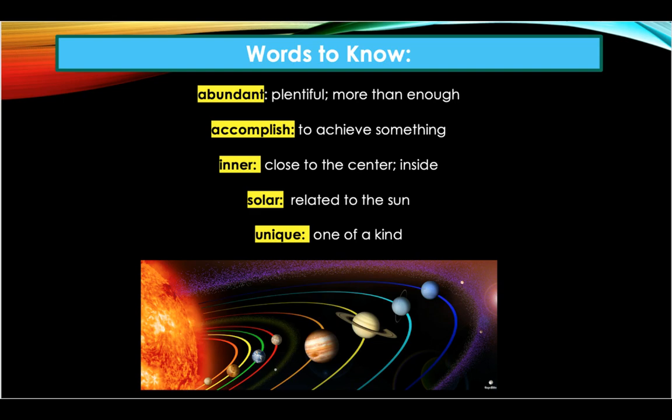The first word is abundant. Abundant means plentiful, more than enough. An example of this is: the farmers celebrated their abundant harvest with a town fair. The word is abundant.